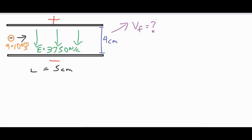In this video we're going to be taking a look at a charged particle that's moving in between a capacitor, and as it moves through this electric field it's going to have an exiting velocity and a specific angle at which it's leaving that capacitor. We're going to take a look at our values and use a bunch of different concepts to figure out the final velocity and the angle.